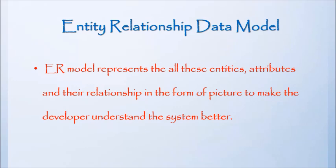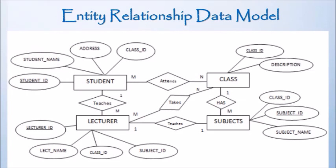ER Model represents all these entities, attributes and their relationship in the form of picture to make the developer understand the system better. For example, a simple ER diagram maps entity like student, lecturer, class, subjects with each other to form the relation among them. It also lists the attributes of each object.